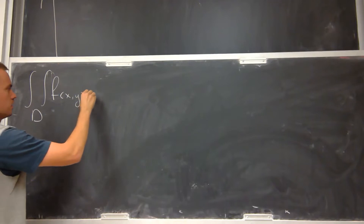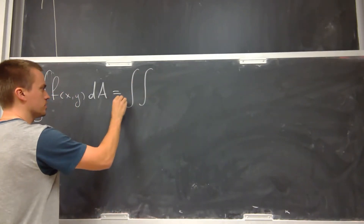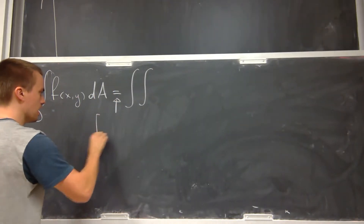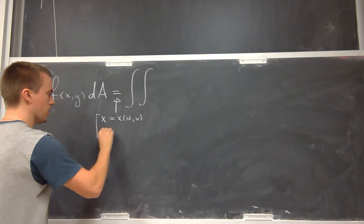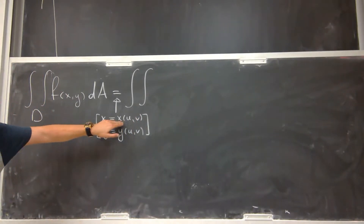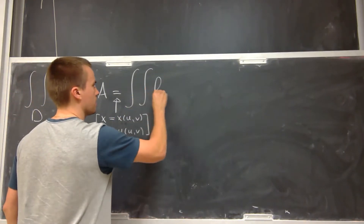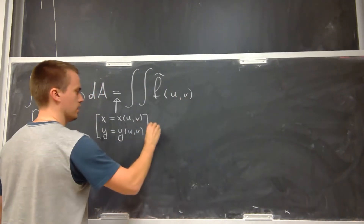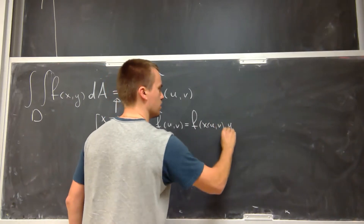I want to explain the following formula. If we have the double integral over the region D of my function f(x, y) dA, then this integral will be equal to a new double integral. For this equality sign I'm doing the change of variables, writing x as a function of u and v, and y as a function of u and v. So the function f becomes f-tilde of u and v, where f-tilde(u, v) equals f(x(u,v), y(u,v)).